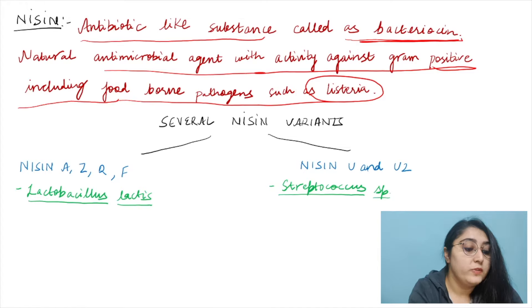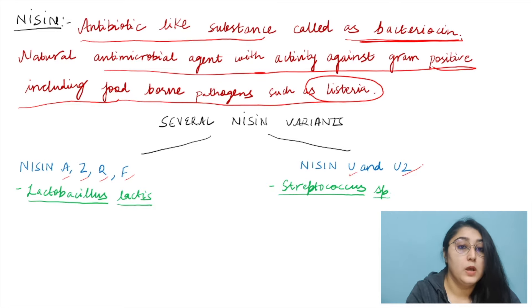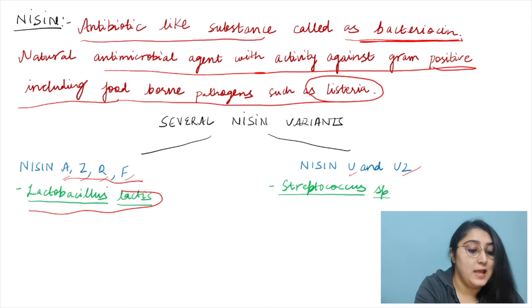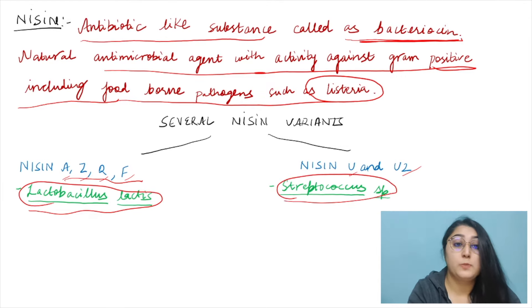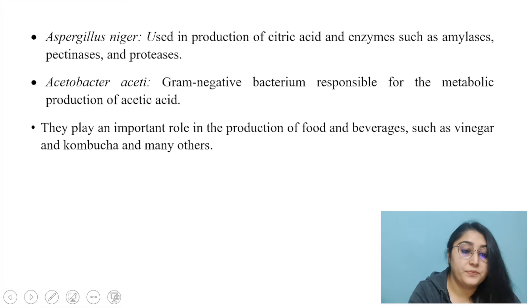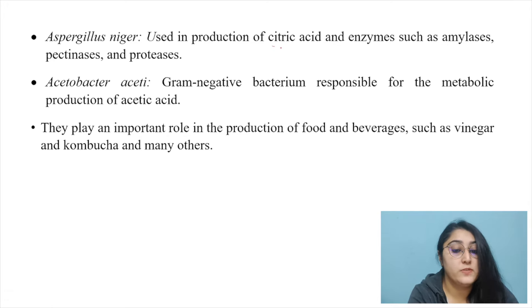There are several variants of nisin: A, Z, Q, F, U, and U2. Variants A, Z, Q, and F are produced by Lactobacillus lactis, whereas U and U2 are produced by Streptococcus species. Therefore the correct answer is Lactobacillus lactis.